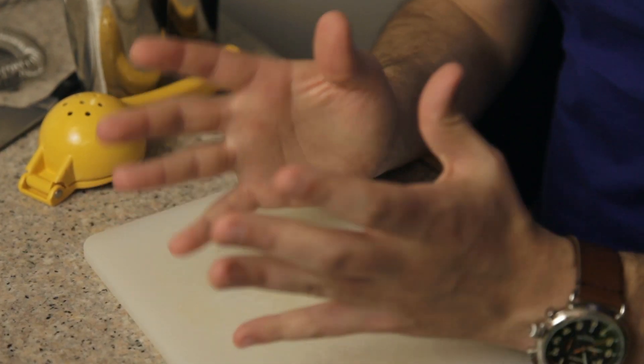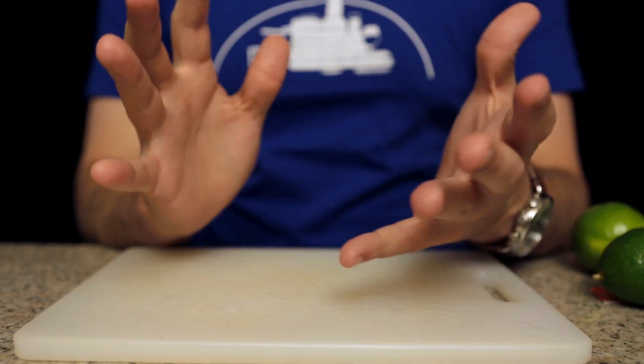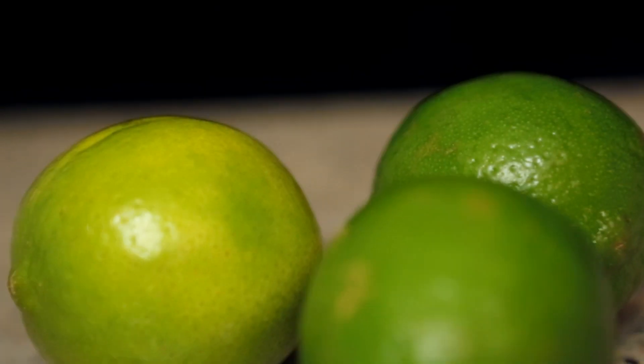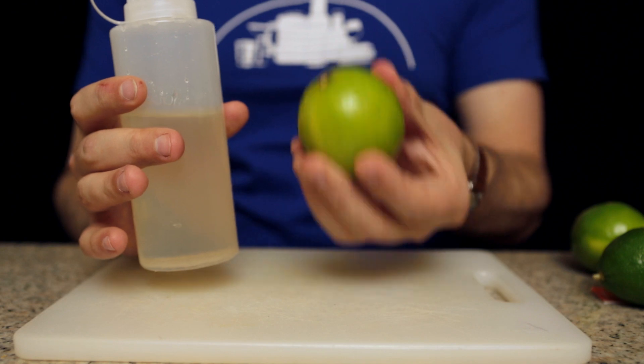Now, a gimlet is traditionally made with a lime cordial, a sweet, syrupy kind of mixture, like Rose's lime juice. I don't love lime cordials because I think they're too syrupy, so I'm going to use fresh lime juice and simple syrup. It accomplishes the same thing but keeps the freshness of the fresh juice.